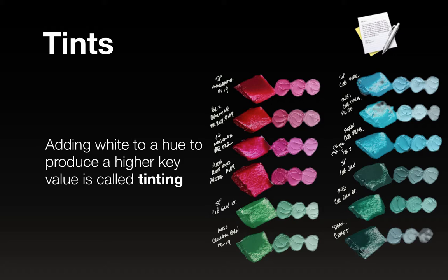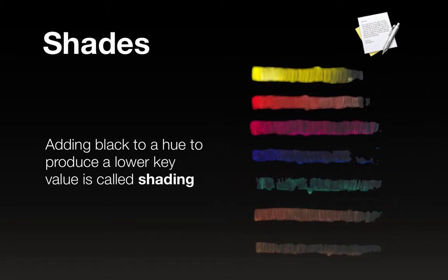Tints — when you add white to a hue to produce a higher key value, it's called tinting. This is something you would typically do with paint. And then shades — adding black to a hue to produce a lower key value is called shading.